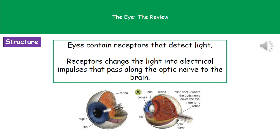In the diagram at the bottom you can see those key features, and you need to be able to label one of those diagrams in the exam. The parts to know are: the pupil, the iris, the retina, the cornea, the lens, and the optic nerve. At the very back of the eyeball where the optic nerve comes together is the blind spot — the area where we have no receptors on our retina, hence the phrase blind spot.